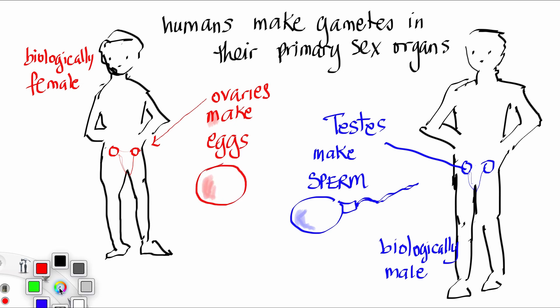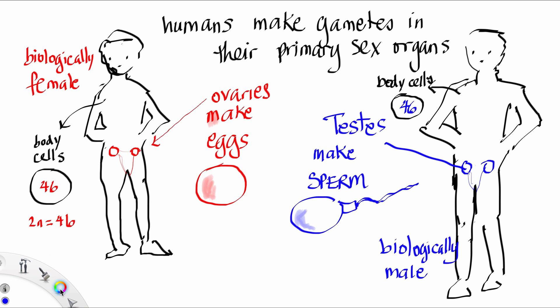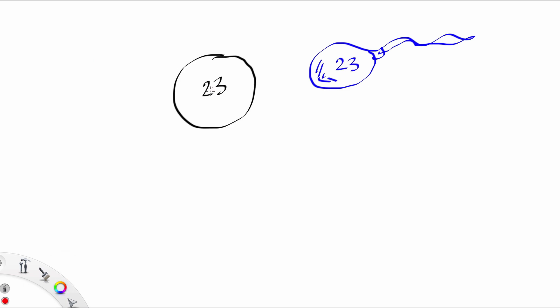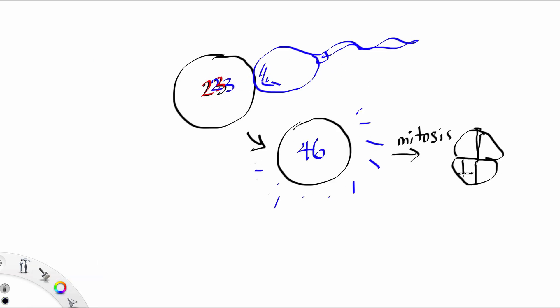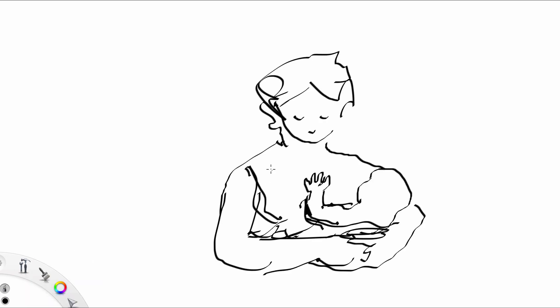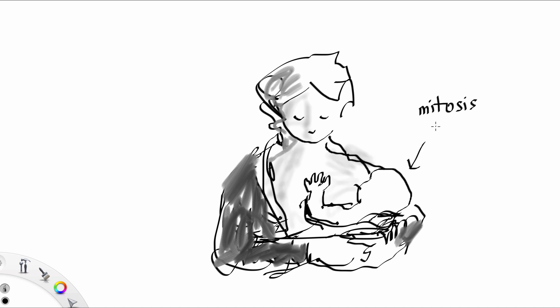Testes make sperm and ovaries make eggs. And while these human body cells all have 46 chromatids, the eggs and the sperm each have 23. And this is so when fertilization happens, we get 46. After lots of mitotic divisions, eventually a baby can be made.